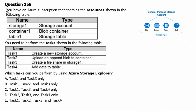Question 158. You have an Azure subscription that contains the resources shown in the following table. We have one storage account named storage1, container1 which is a blob container in the storage account, and table1 which is a storage table in the storage account. You need to perform the tasks shown in the following table. Task 1: create a new storage account. Task 2: upload an append blob to container1. Task 3: create a file share in storage1. Task 4: add data to table1. Which tasks can you perform by using Azure Storage Explorer?